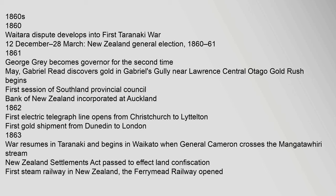1859: First session of Hawke's Bay and Marlborough Provincial Councils. Gold discovered in the Buller River. New Zealand Insurance Company established. 1860s: 1860: Waitara dispute develops into the First Taranaki War. 12 December – 28 March: New Zealand general election. 1861: George Grey becomes Governor for the second time. May: Gabriel Reid discovers gold in Gabriel's Gully near Lawrence; the Central Otago Gold Rush begins.